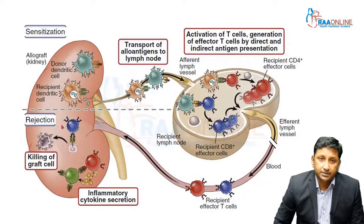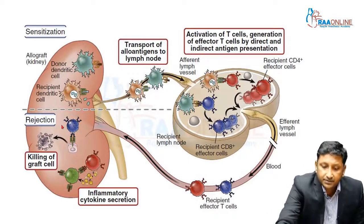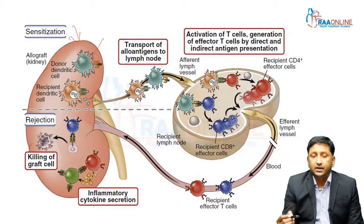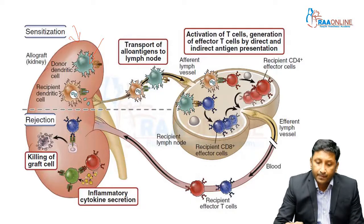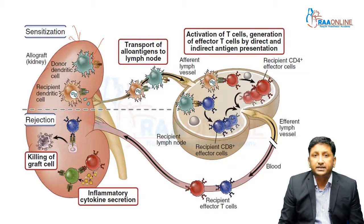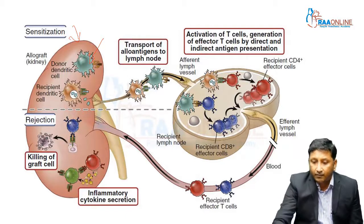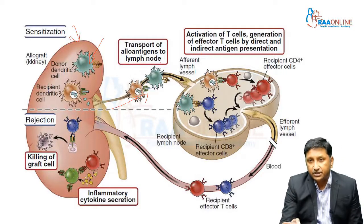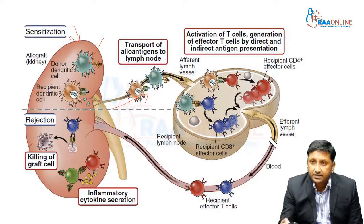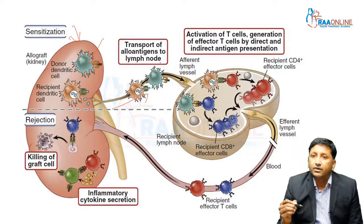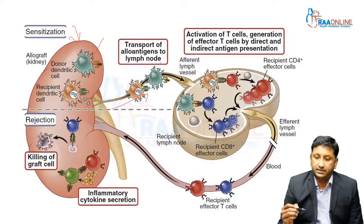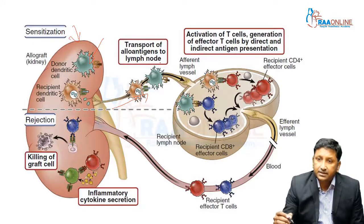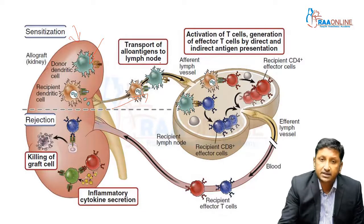In this picture there is a kidney graft. Dendritic cells are the antigen-presenting cells responsible for presenting antigens to the recipient's immune mechanism. The donor dendritic cell engages with the recipient dendritic cell, and then they travel via the afferent vessel to the lymph nodes. There, allo antigens are transported and T-cells are activated — generating effector T-cells through either a direct or indirect antigen presentation mechanism. The recipient CD4 effector cells, shown in red, travel through the efferent lymph vessel, where they pair with recipient CD8 cells, and together they attack the graft.